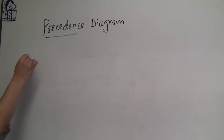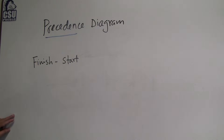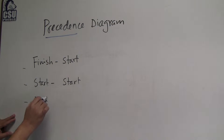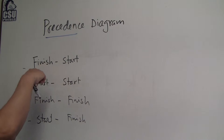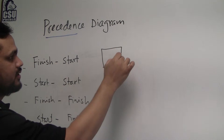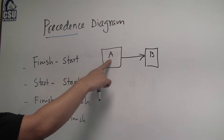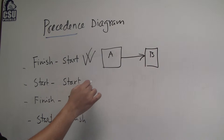So what can the precedence diagram do? It can handle the finish-to-start relationship, just like the node diagram, where one activity finishes and the other starts. Activity A, activity B — B can start once A finishes. This is similar to the node diagram and is the most commonly used relationship.